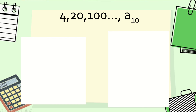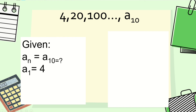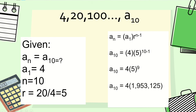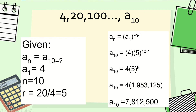Now it's your turn. Find the 10th term of the sequence 4, 20, 100. The given: a sub n equals a sub 10, a sub 1 equals 4, n equals 10, r equals 5. The formula gives a sub 10 equals 4 times 5 raised to 10 minus 1, which equals 4 times 5 raised to 9. Since 5 raised to 9 equals 1,953,125, then 4 times 1,953,125 gives the final answer of 7,812,500.